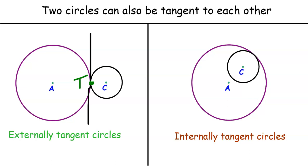On the right, we see internally tangent circles. That is, the center of one circle is contained within another circle, like circle C is contained within circle A. Again, they are both tangent to the same line at the same point.